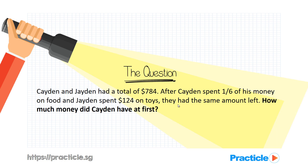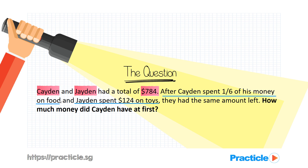After reading the question, what do we know? We know that there are two people involved — Caden and Jayden — and the item we are looking at is the amount of money. Both of them started with some money. We don't know how much each had, but we do know how much of their money they spent: Caden spent one-sixth, and Jayden spent $124.